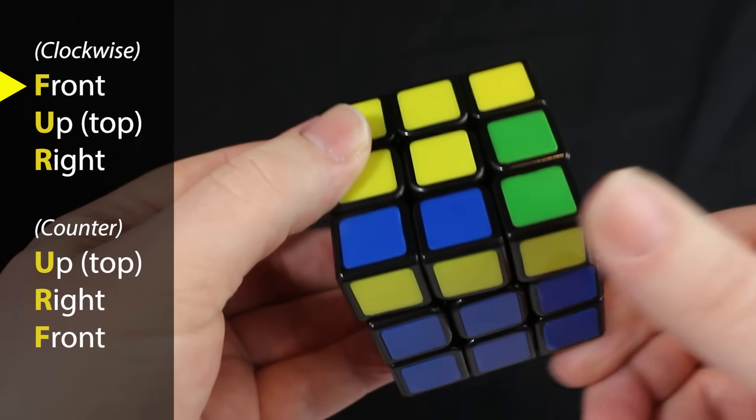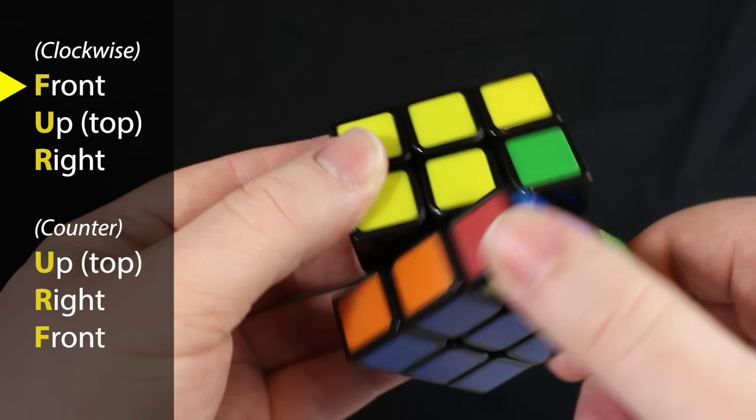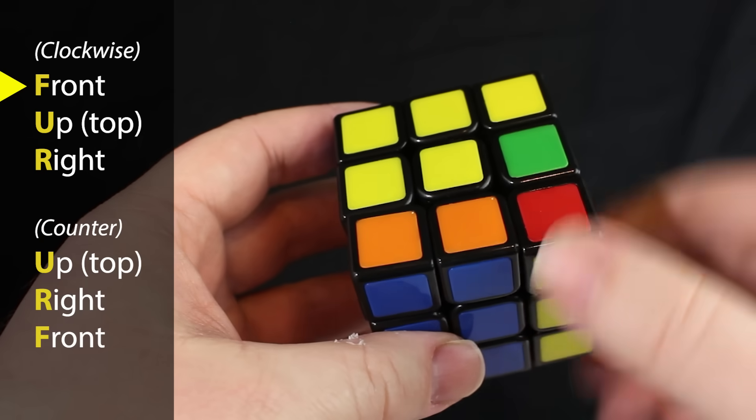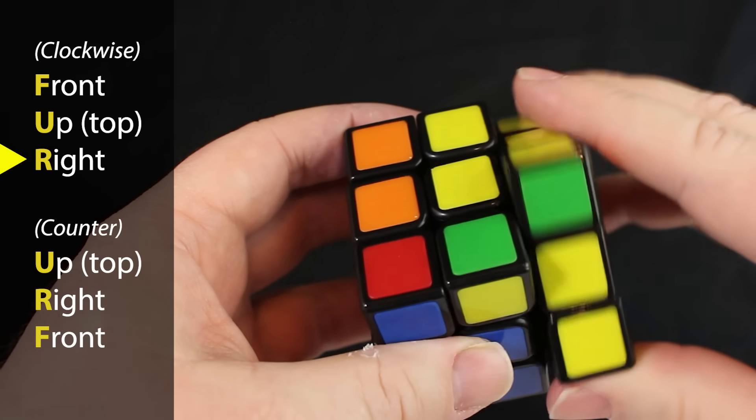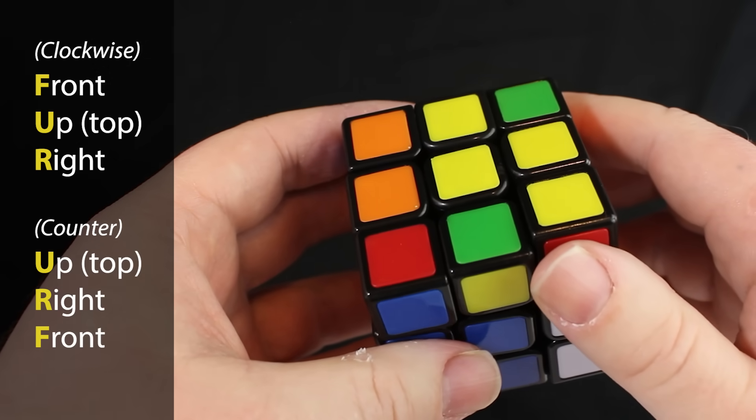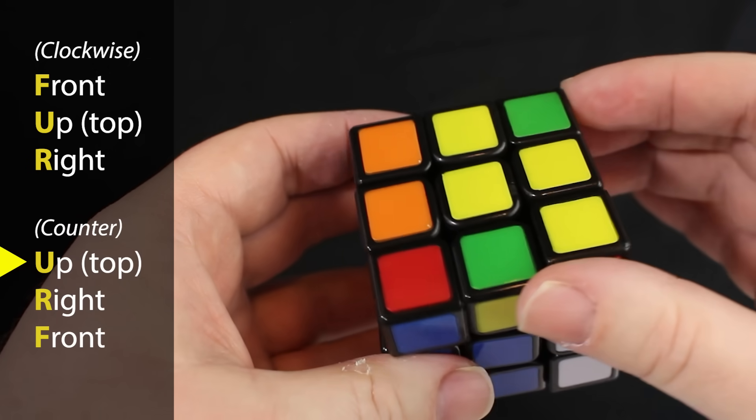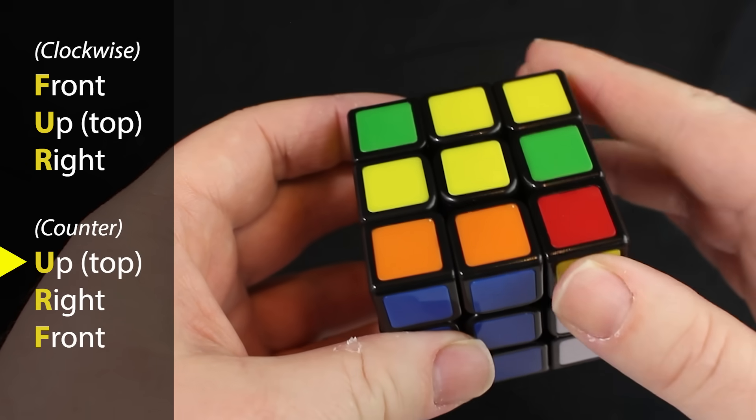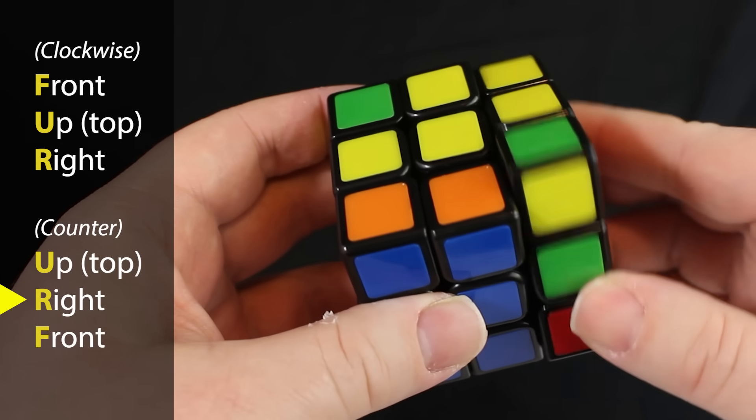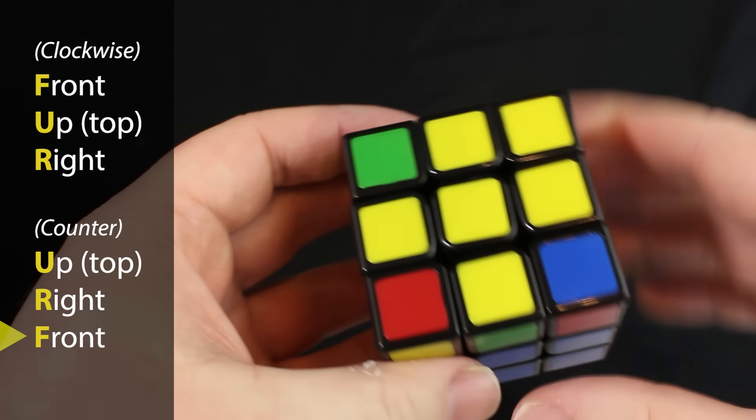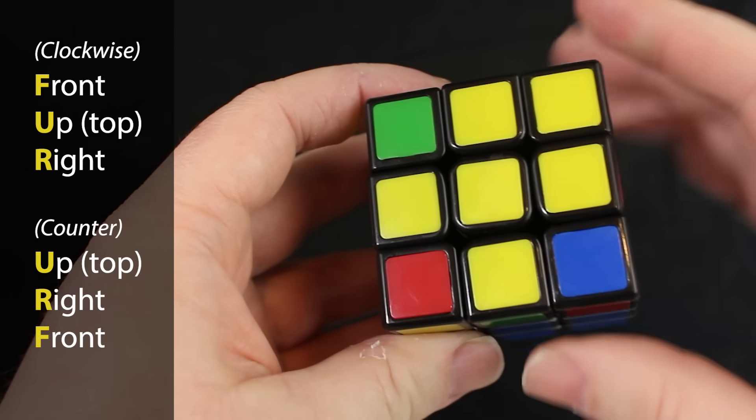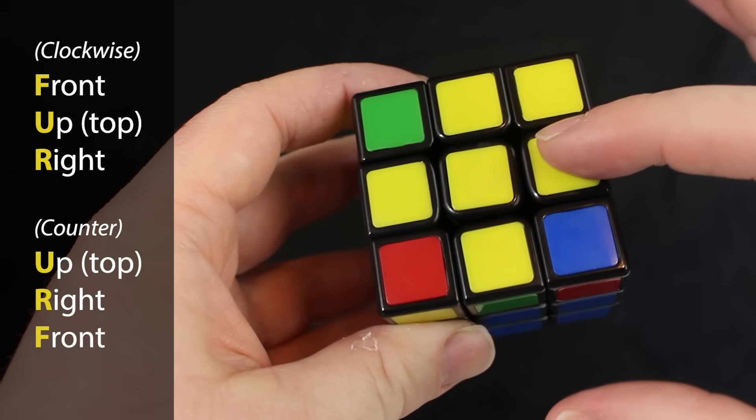So let's do that. Clockwise moves of the front, and then the top, and then the right. Then the counterclockwise moves: the top goes counterclockwise, then the right side, and then the front. And we were able to do the yellow plus, just like that. There's your yellow plus.